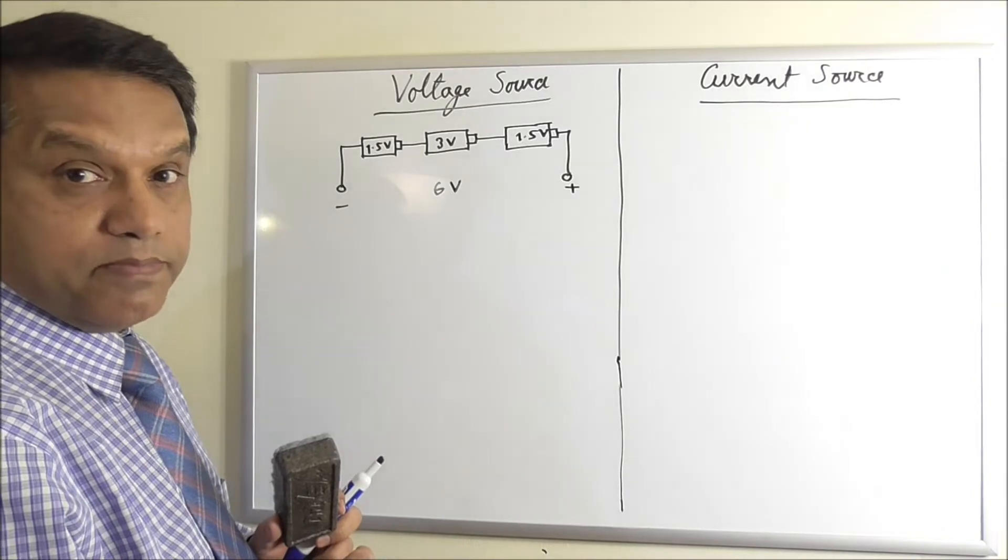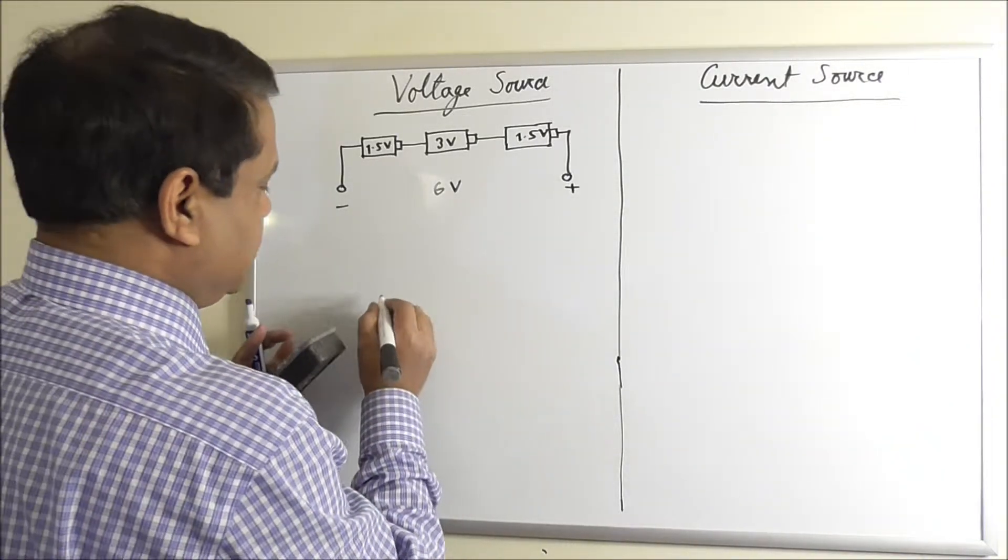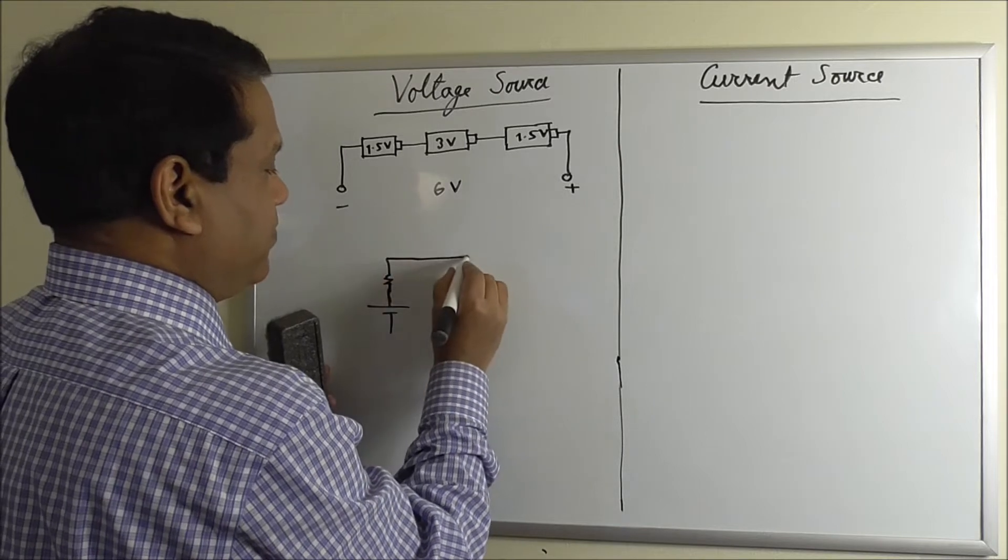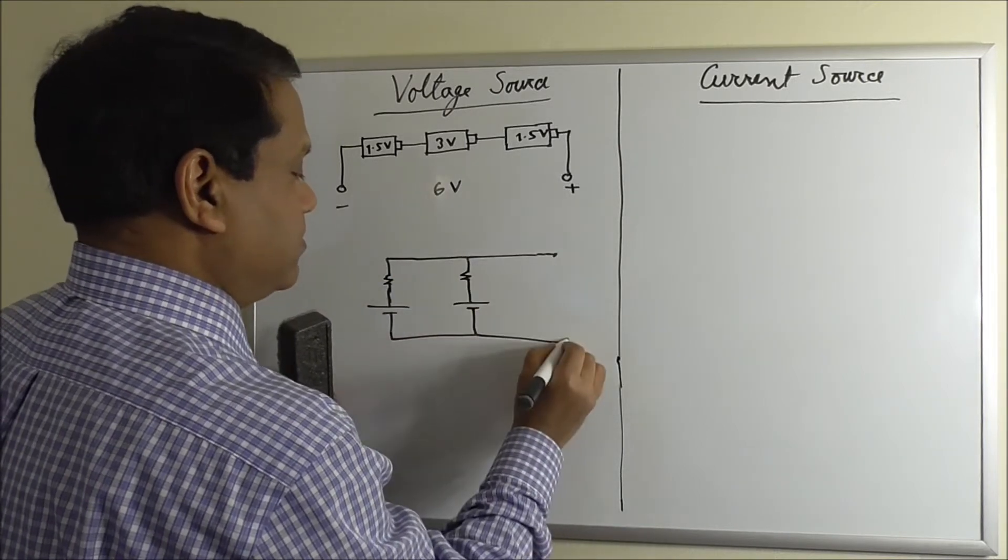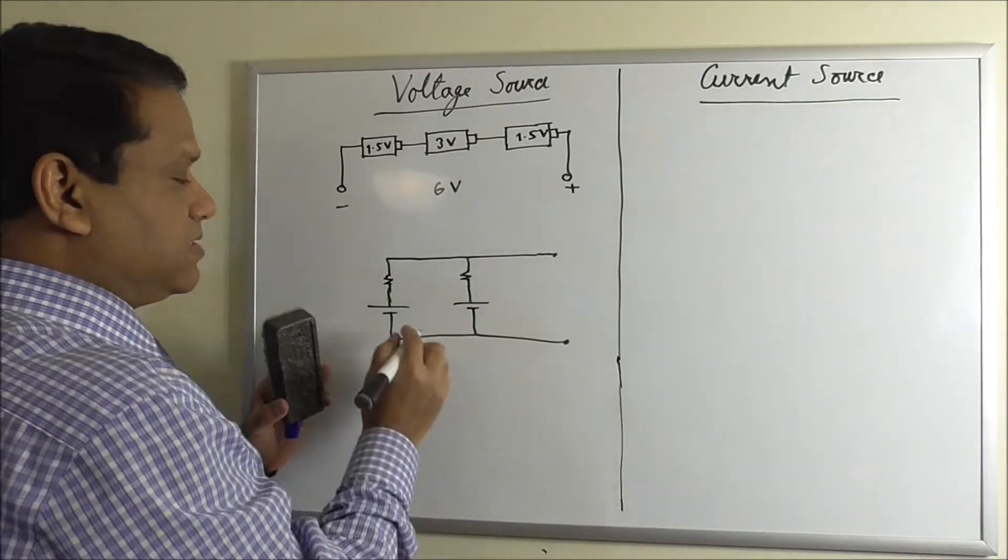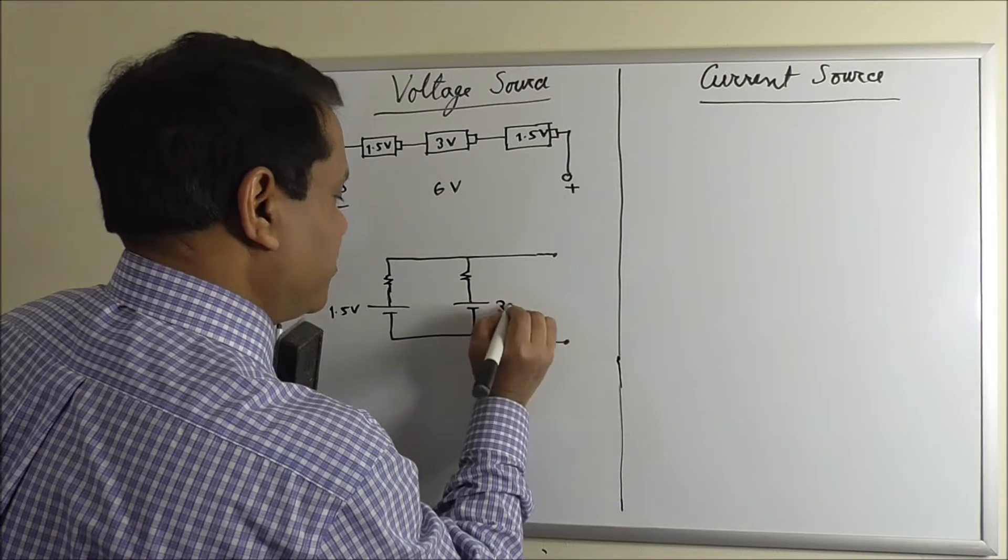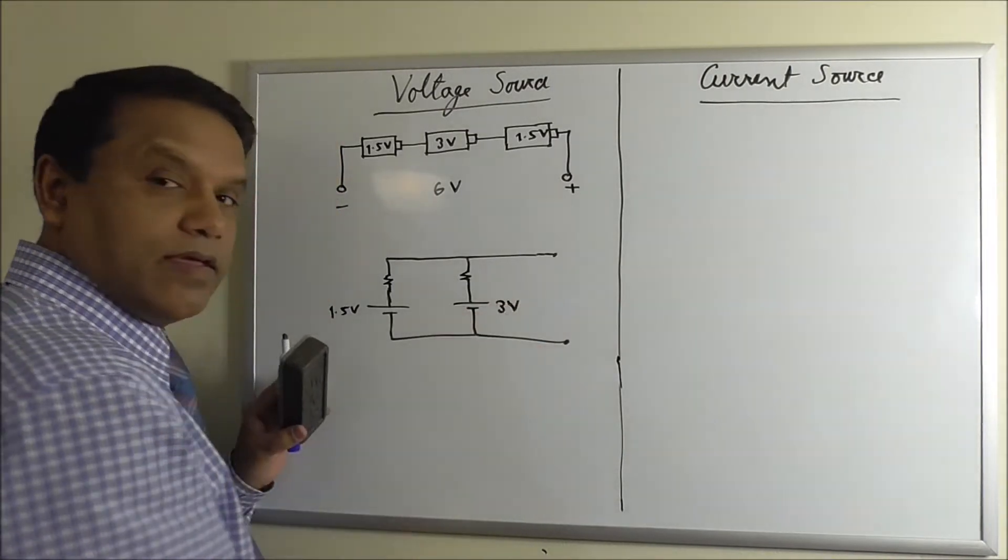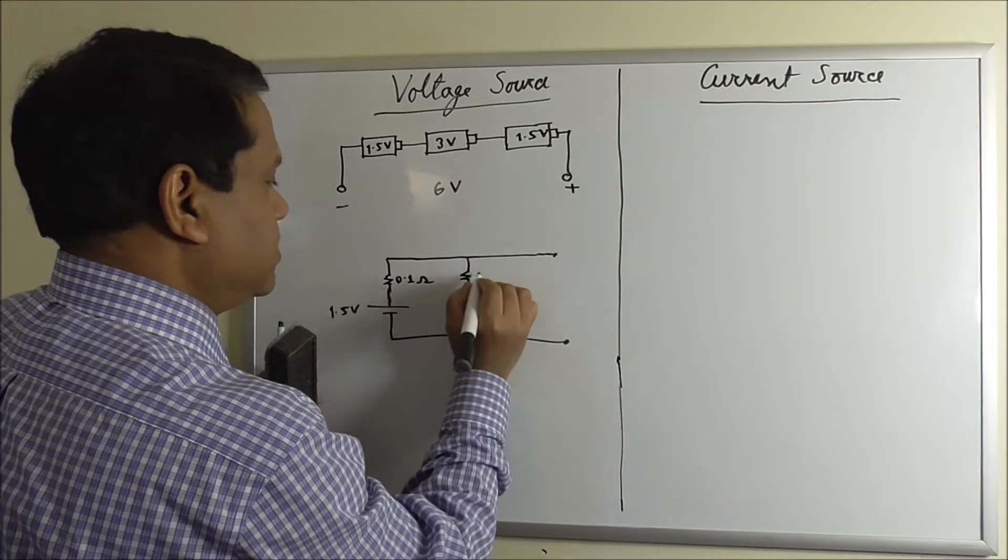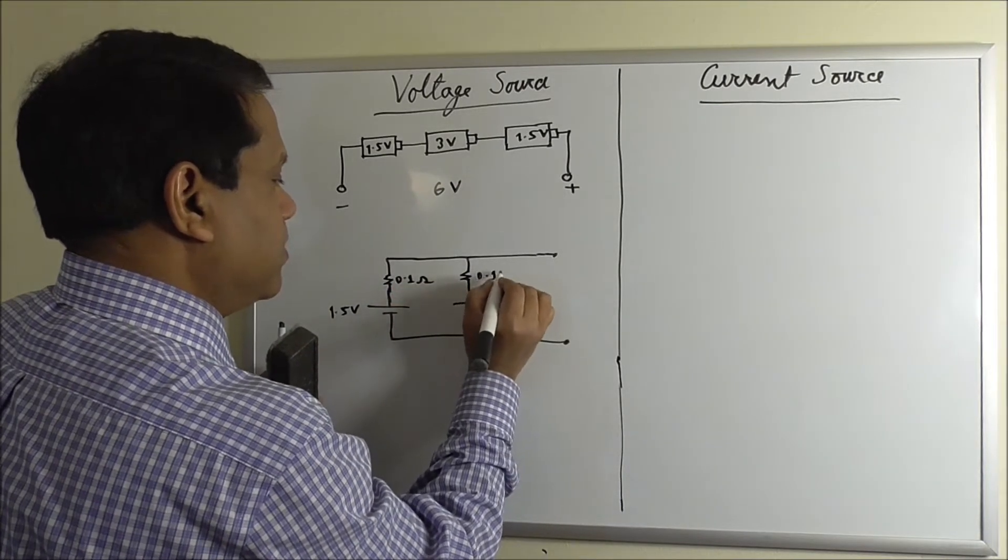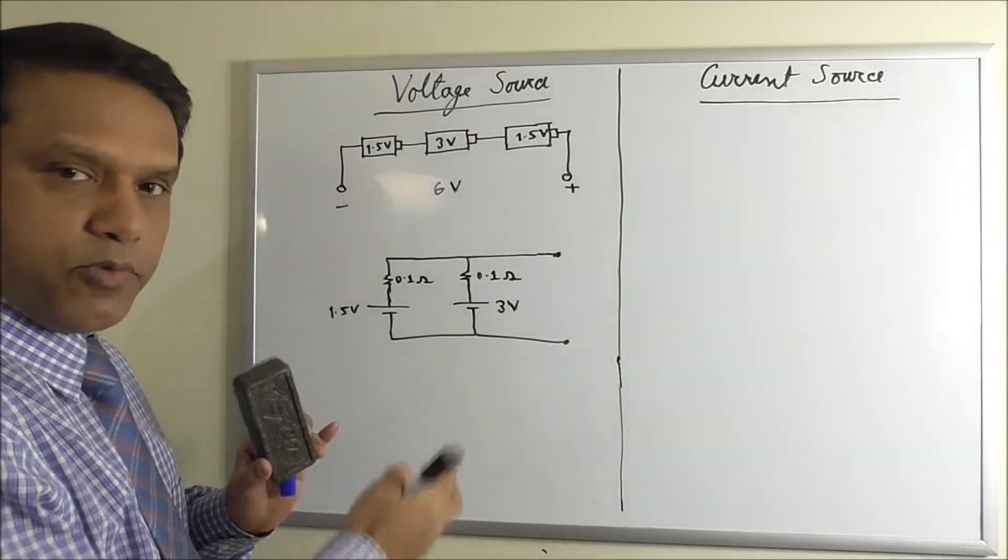What happens if you connect them in parallel? To make it simpler, let's just draw two batteries. If you connect them in parallel, hoping that you will connect a load here, suppose this is 1.5 volt and this is 3 volt, and say this is 0.1 ohm, this is 0.1 ohm. What will happen the moment you connect it?